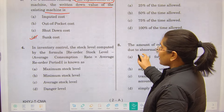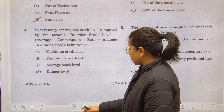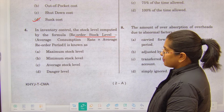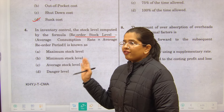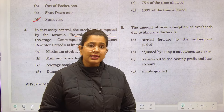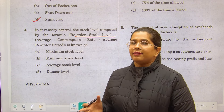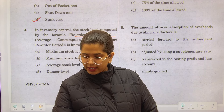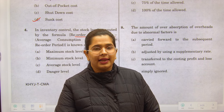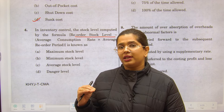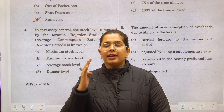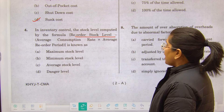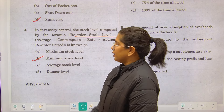Next, in inventory control, the stock level computed by the formula — reorder stock level less average consumption into average reorder period — is known as minimum stock level. If you have read costing, there are formulas for maximum, minimum, average, and danger levels. Minimum stock level is the level at which you should be ordering stock again; it is kept as a safety level. Once you reach it, you know you have to restock.